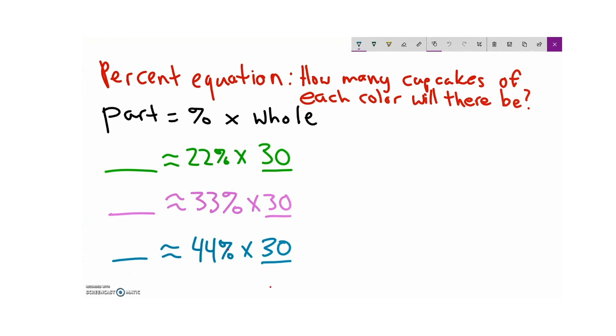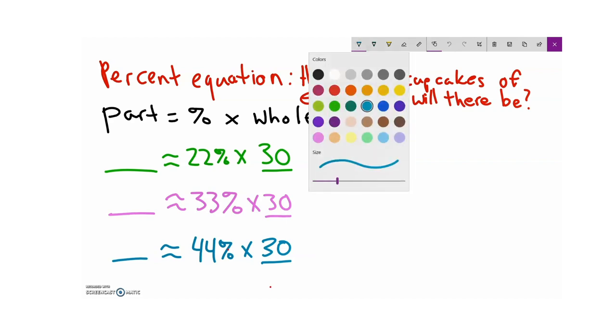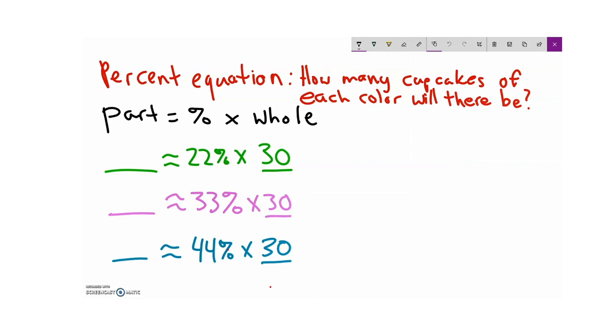So for the next part of the problem, we are going to model and solve using the percent equation. We want to know how many cupcakes of each color will there be? Well, let's remember our percent equation is part equals the percent times the whole. And we already figured out that 22% of all of the cupcakes will be green. 33%, approximately 33% will be pink and 44% will be blue. So all we have to do is multiply by changing the percent to a decimal and multiply. So this becomes 0.22 times 30, which is equal to approximately 6.6 or 7 cupcakes.